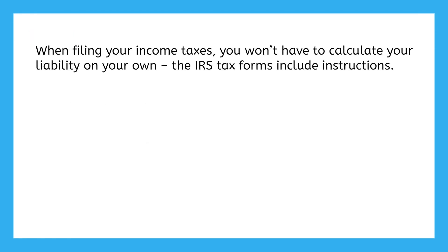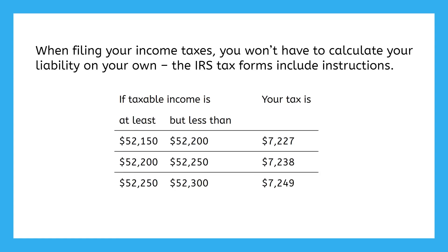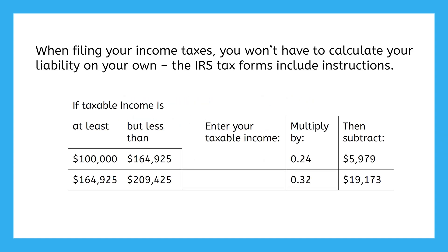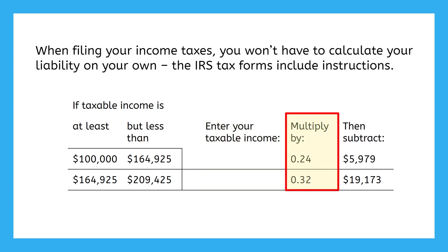When you actually go to file your taxes, you won't have to do all this math. The IRS has made things even simpler by providing an instruction form to help you calculate your tax liability. It's full of tables like this one from 2021, and all you have to do is find the range with your income and it will tell you how much you owe. If your taxable income is over $100,000, you do have a little more work cut out for you, but the instructions will walk you through every step: put your taxable income here, multiply by this, and then subtract a given amount. Just like that, you will know how much you owe.